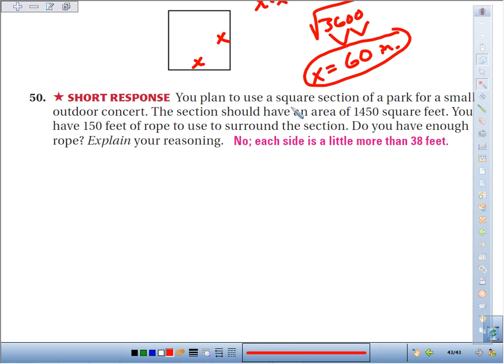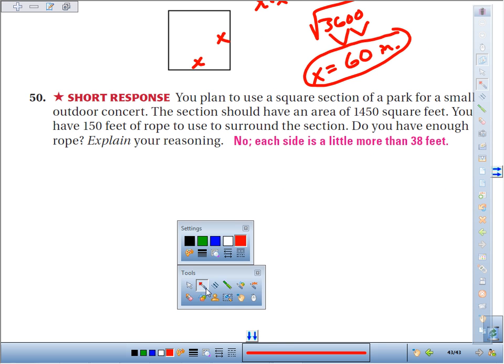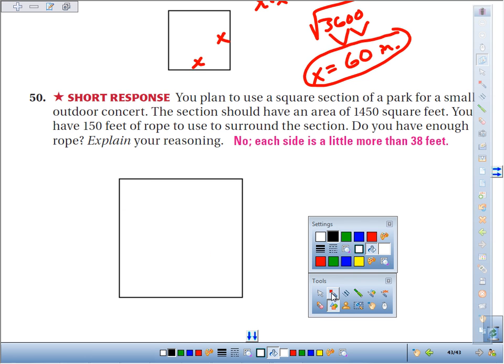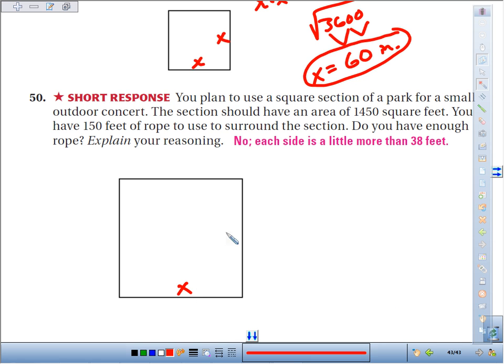And then number 50, you plan to use a square section of a park for a small outdoor concert. The section should have an area of 1,450 square feet. So again, with a square, side lengths are equal. Call it x.